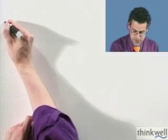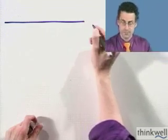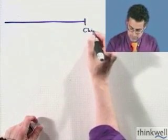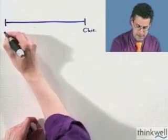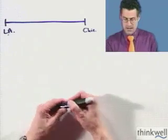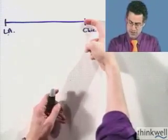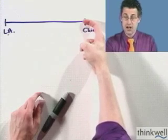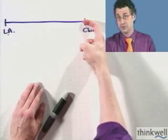So first of all, let's just draw a very simplistic version of a picture. Here's Chicago and here is LA. I know that Arsenio is going to start from Chicago and head over to LA and that he's going to travel at a constant rate of 540 miles per hour.